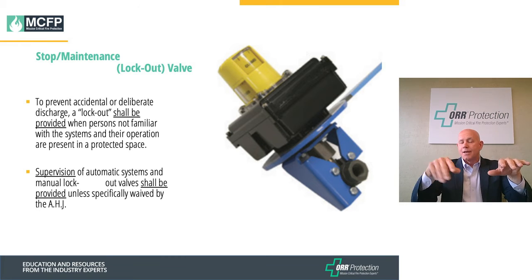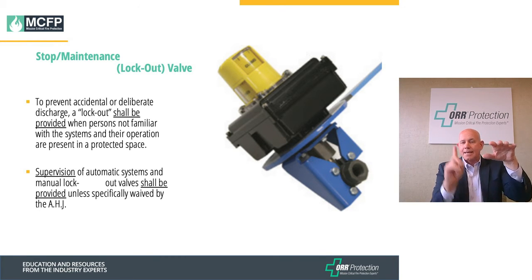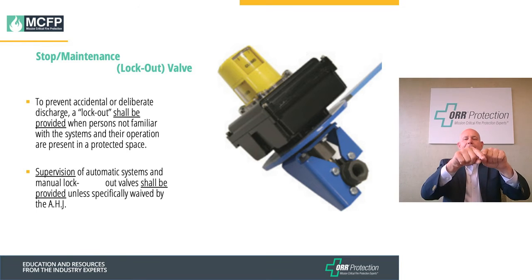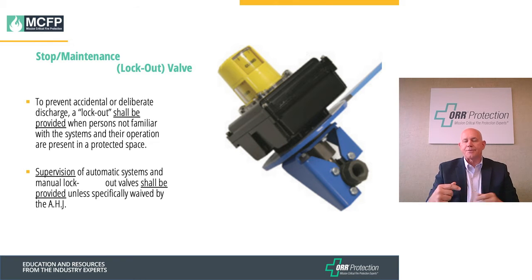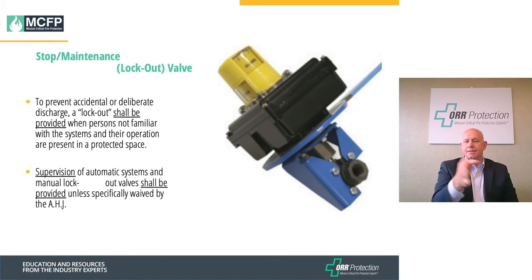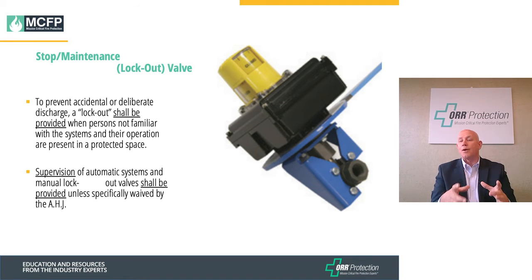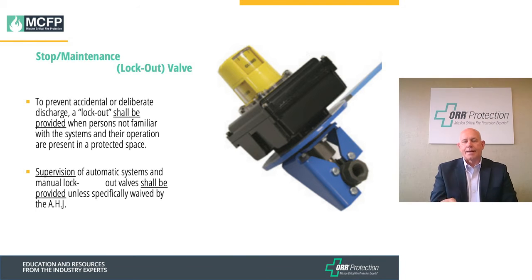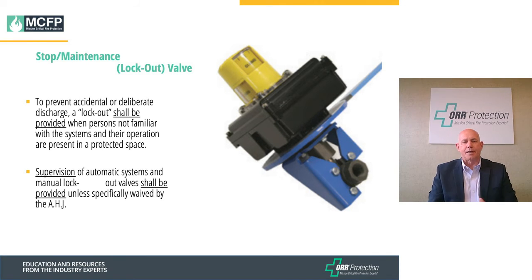The valve must have both mechanisms: the lockout valve capable of accepting a physical lock in the off position, and electronic supervision providing notification back to the panel — a two-stage valve configuration. For multiple zones off a low pressure tank, the code does give some tolerance: as long as you're not working on any other zones live, you can use the master valve at the tank as the main lockout valve. Putting a lockout valve on every individual line is an option, but not required by code.